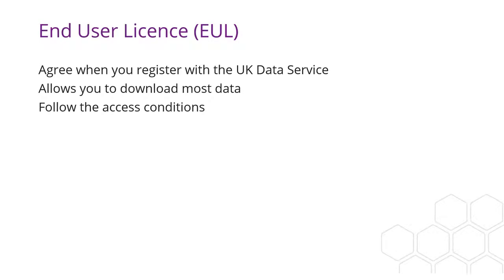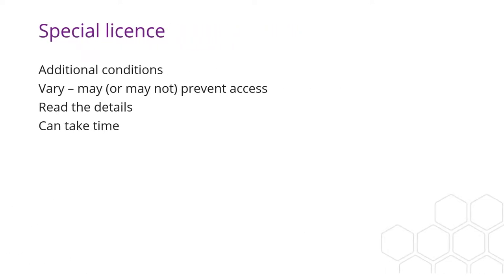However, you'll need to follow the access conditions that you've agreed to, which include not sharing the data with others. Special license datasets are safeguarded datasets with additional conditions that need to be fulfilled before you can access the data. The additional conditions vary and may or may not prevent student access. You'll need to find out by reading the details. It's also important to know that in some cases fulfilling the conditions can take time, which could be a problem when working to a deadline.